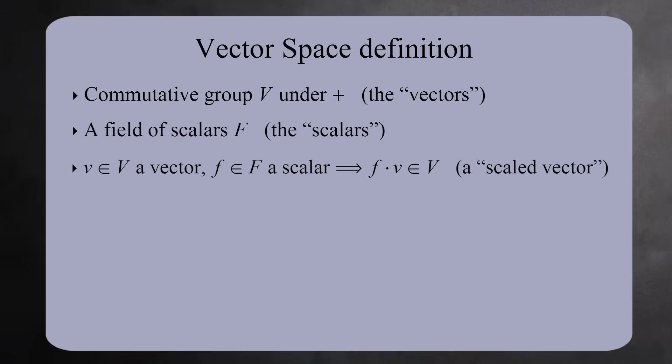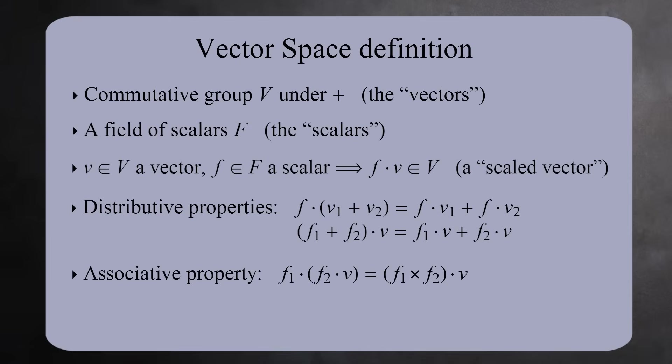You can multiply any vector in the group by any scalar in the field, and you'll get a new vector. The operation between scalars and vectors obeys the distributive and associative properties. And lastly, vectors are unchanged when multiplied by 1. Here we have the full definition of a vector space.